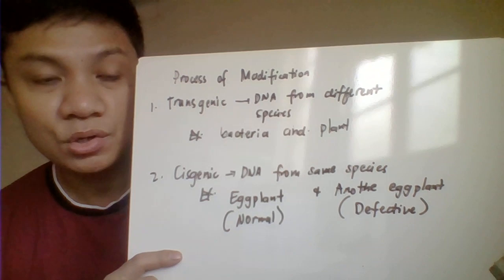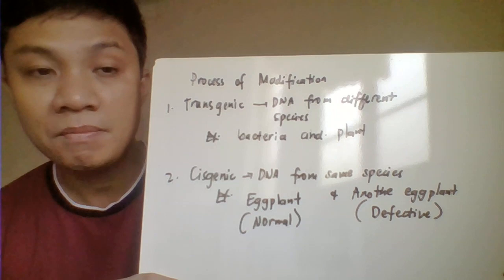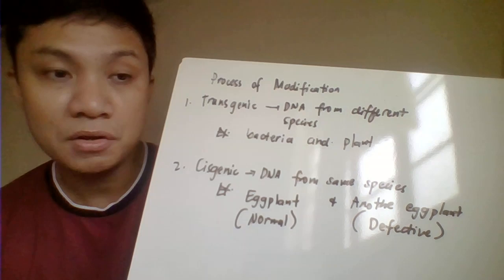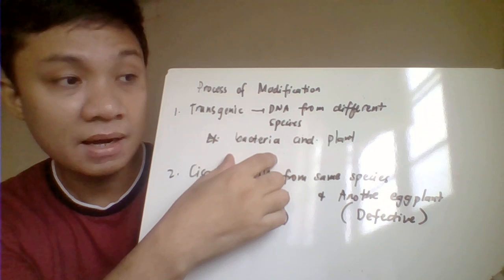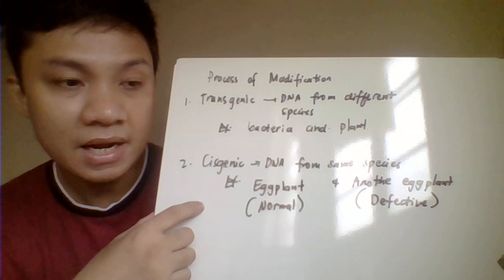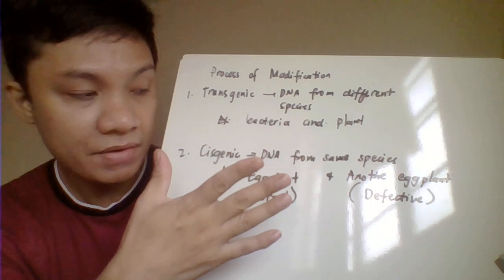The process of genetic recombination can be done in two ways: transgenic and cisgenic. Transgenic is a process of genetic recombination wherein the DNA came from different species — meaning your host and your donor of foreign DNA are of two different species. For example, the host is a plant and the foreign DNA came from a bacteria — they are different species, so it is called transgenic. Cisgenic, on the other hand, is genetic recombination wherein the foreign DNA came from the same species as the host organism — for example, eggplant to eggplant.